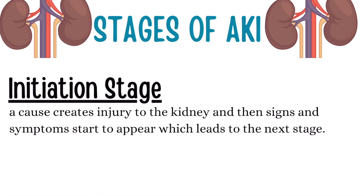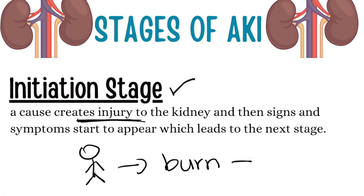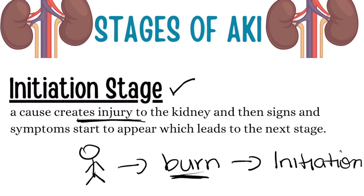Now that we know the three major causes of AKI, what are the stages? There are four major stages. The first stage is the initiation stage — this is when there is a cause that creates the injury. You're going to start to see signs and symptoms appearing because now there is an injury to the kidneys. For example, if a patient had a burn, this will start with the initiation stage because you're going to start to see signs and symptoms, and we know this is a pre-renal injury.